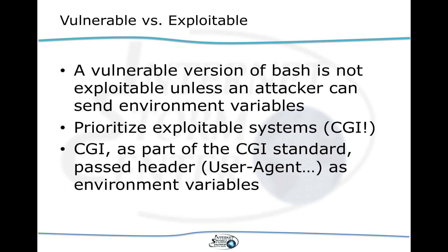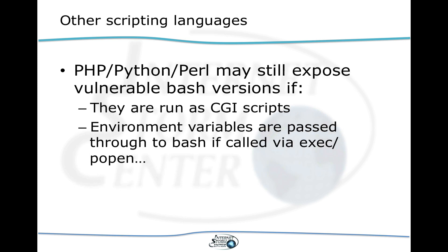If you're running a vulnerability scan, it will usually fail to find many of the CGI bin vulnerabilities. However, scanners are pretty good at finding vulnerable versions of bash if you allow the tool to log in to the server — an authorized scan with credentials can easily figure out if you're running a vulnerable version of bash. Other scripting languages are not vulnerable by themselves, but sometimes web developers call bash scripts using commands like exec or popen, and in that case you may be vulnerable again.